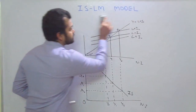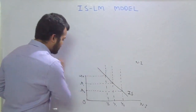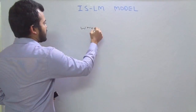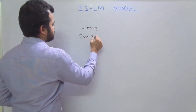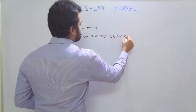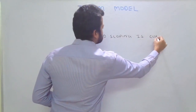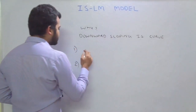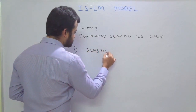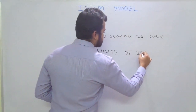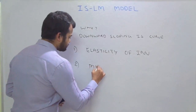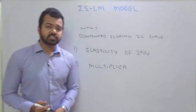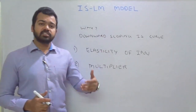There are two reasons why the IS curve is downward sloping. The first one is the elasticity of investment — meaning how responsive investment is to changes in the rate of interest. The second reason is the multiplier effect.